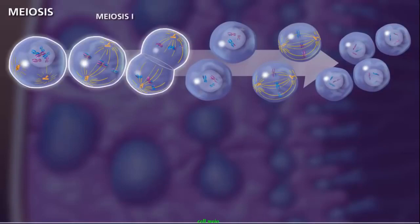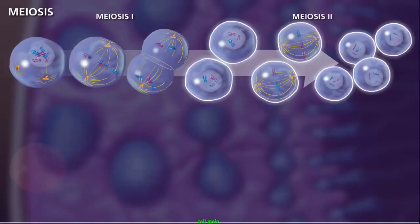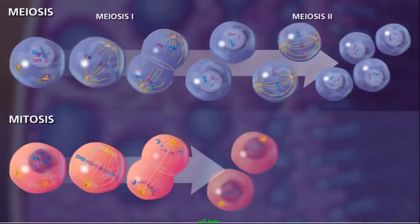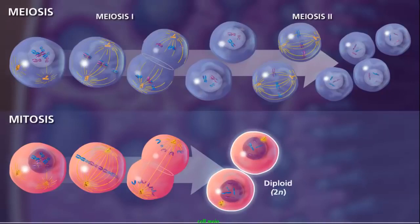These divisions are termed meiosis I and meiosis II. Although the processes of mitosis and meiosis look similar, there are a few major differences. One obvious difference is that mitosis results in two diploid daughter cells, and meiosis results in four haploid cells.